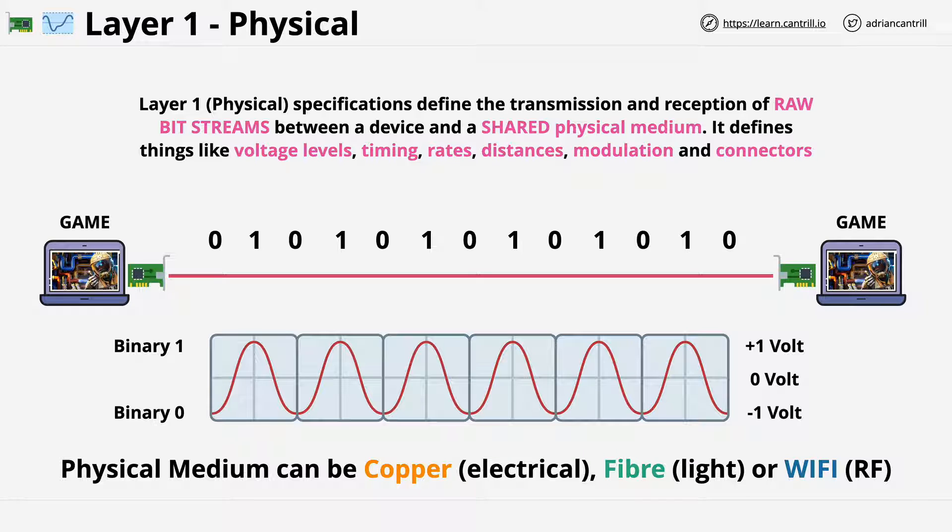So just to reiterate what we know to this point, we've taken two laptops, we've got two layer 1 network interfaces, and we've connected them using a copper cable, a copper shared medium. And because we're using a layer 1 standard, it means that both of these cards can understand the specific way that binary 0s and 1s are transmitted onto the shared medium.